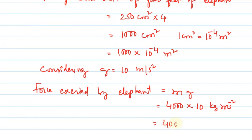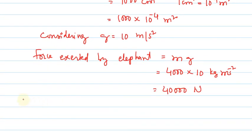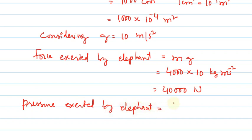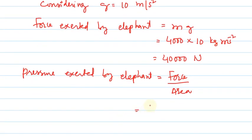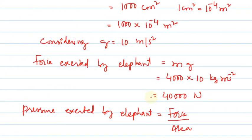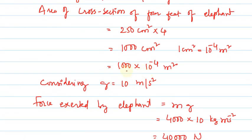Force exerted by elephant equals mass into gravity: 4000 into 10 equals 40,000 newtons — kilogram meter per second square is nothing but newtons. Pressure exerted by elephant equals force by area, that is 40,000 newtons upon 1000 into 10 to the power of minus 4 meter square, which simplifies to 40,000 divided by 1 by 10 meter square — since 1000 divided by 10,000 leaves 1 by 10. So we get 40,000 into 10, giving 40 into 10 to the power of 4 pascals.